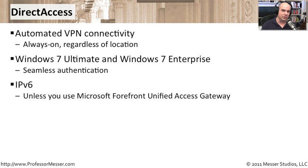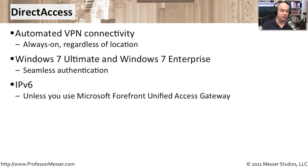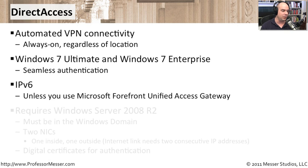Direct access uses IPv6 as its primary communication path back to the corporate office. Microsoft introduced the Microsoft Forefront Unified Access Gateway, which removes some of these IPv6 requirements. But if you're using direct access without that Microsoft UAG, you'll want to make sure you have a way to communicate via IPv6. Much of what we'll cover in this video is how to configure the setup for direct access and use those IPv6 requirements.